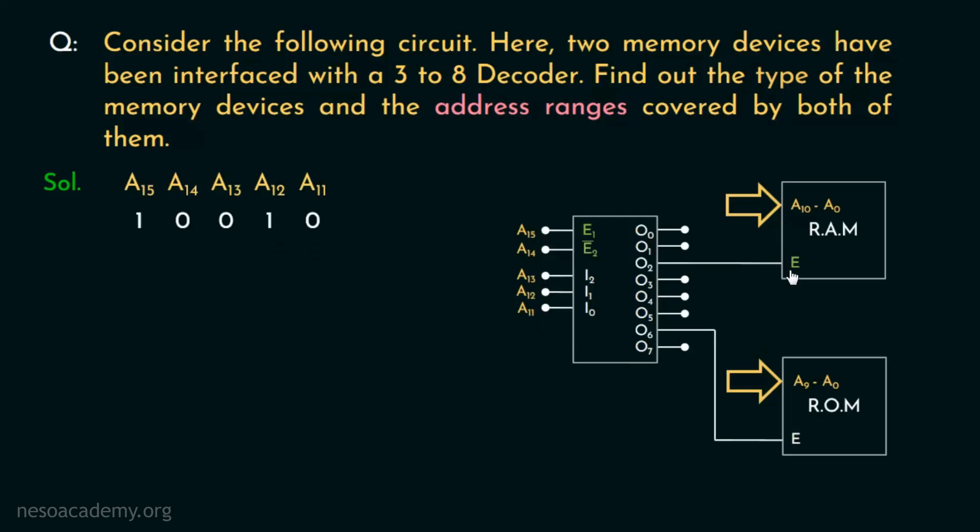Now coming to the ROM, it is connected to the output line O6 of the 3 to 8 decoder. Again for the ROM, the value given through A15 and A14 will remain the same, that is 1 and 0, because that enables the decoder. However, through A13, A12 and A11, we will have to feed 1, 1, 0, that is 6, to enable the ROM.